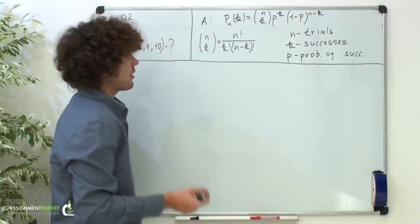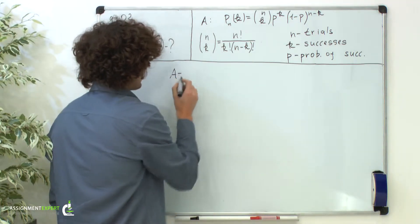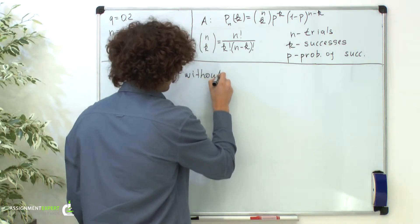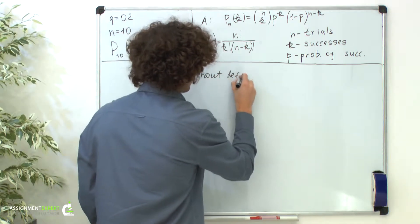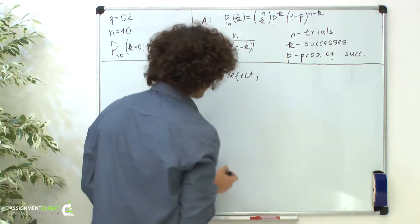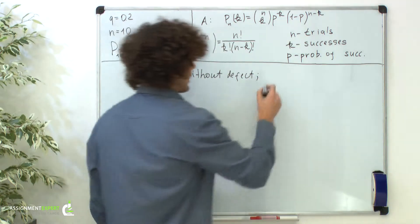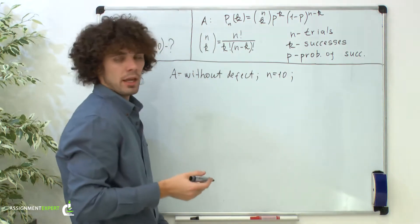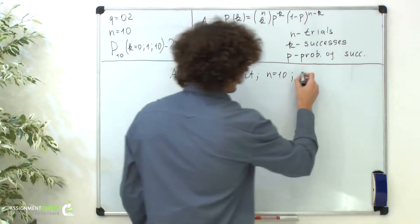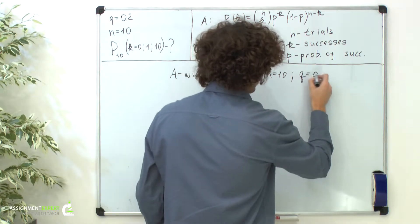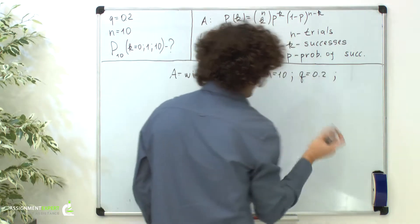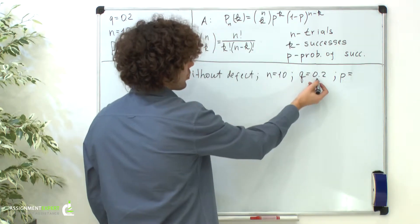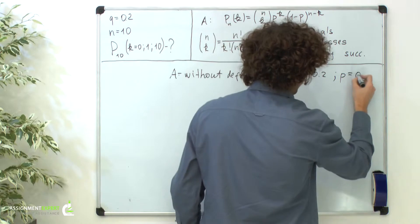In our case, the event of interest A is getting a detail without defect. The total number of details n equals 10. The probability that each of them has a defect q equals 0.2. Then the probability that a detail has no defect is 1 minus 0.2, which equals 0.8.